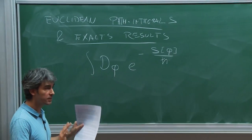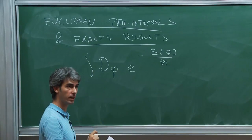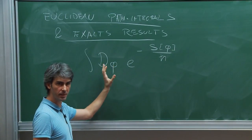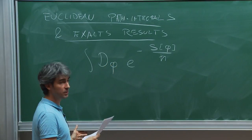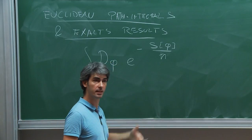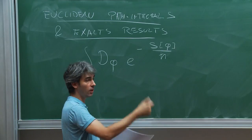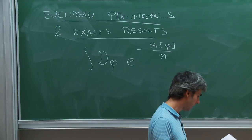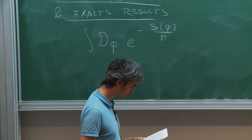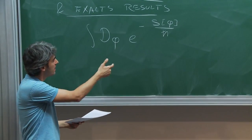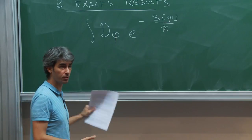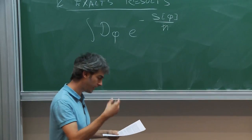Even though we can compute some path integrals with localization, we will not be able to compute every path integral. That would mean solving the theory completely and computing any observable — which would be awesome but is not the case. We can compute some path integrals, and this class of observables is large and contains a lot of interesting physical information. Localization is by no means the only non-perturbative tool — for conformal theories there is the conformal bootstrap, for integrable theories there is integrability, and many other methods exist.